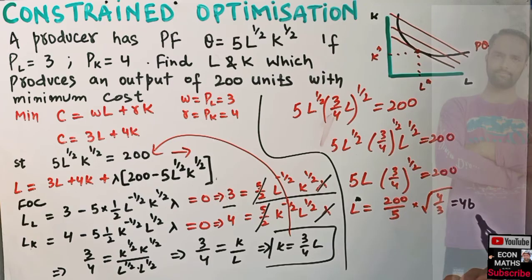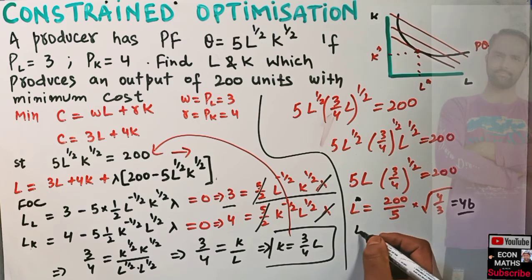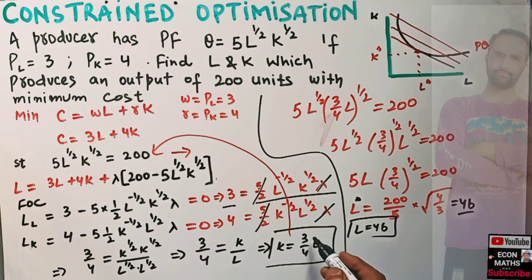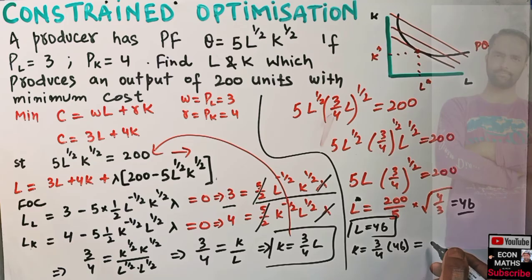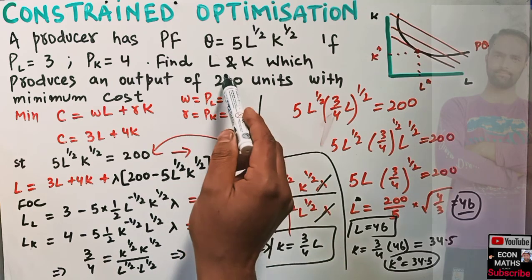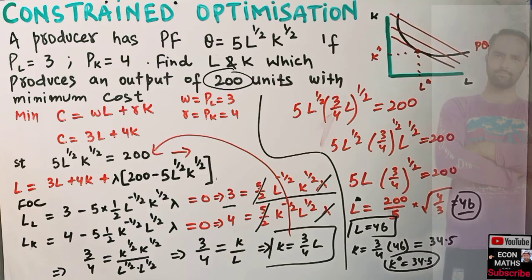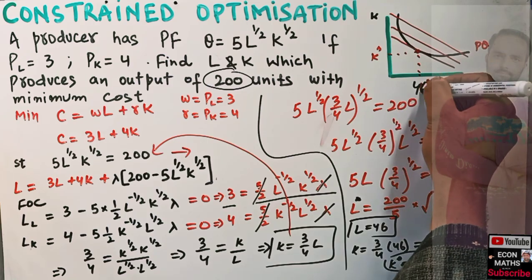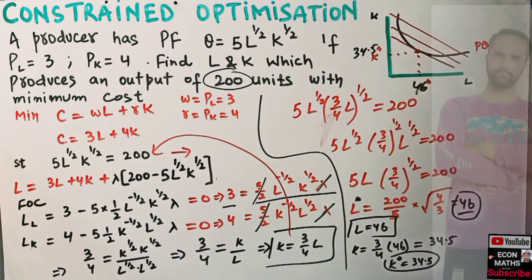With L ≈ 46, we find K using K = (3/4)L: K = (3/4) × 46 = 34.5. So we need 34.5 units of capital and 46 units of labor so that costs are minimized and we get a production output of 200. At the tangency point, units of labor equal approximately 46 and units of capital equal 34.5. I hope I made myself clear in this video, thank you.